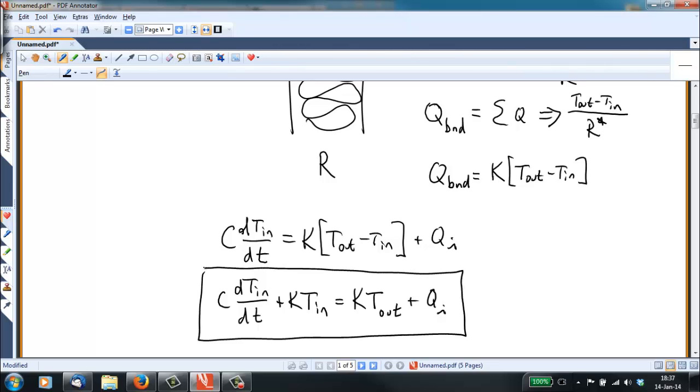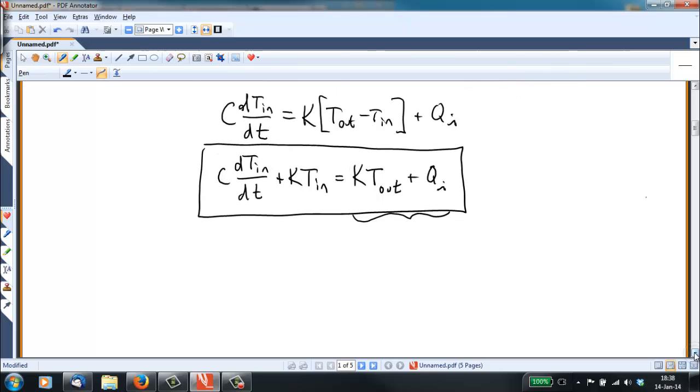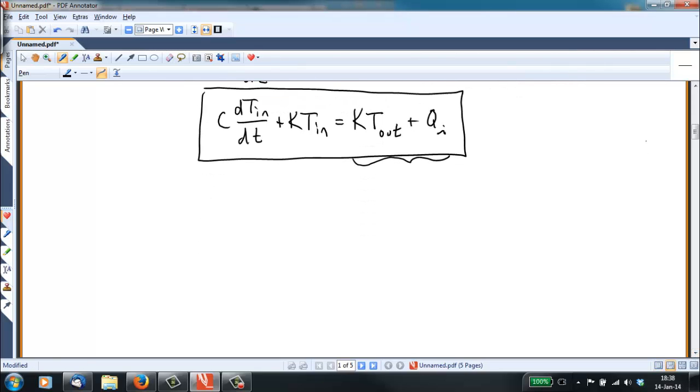This is a first order ordinary differential equation. It's an ordinary differential equation because it only involves ordinary derivatives, not partial derivatives. It's first order because the derivative of the temperature only appears in the first, as the first derivative. It's linear because all of the T_in terms appear by themselves. It actually has constant coefficients because C and K are all constant. It's non-homogeneous because we have these two terms over here on the right, which are forcing terms, which will keep the temperature from going to zero, for example. If you haven't had differential equations, don't sweat it.